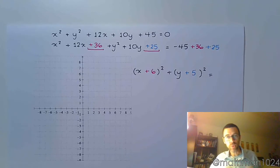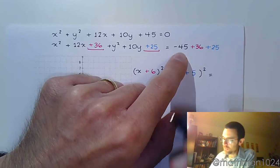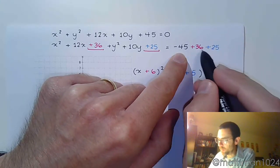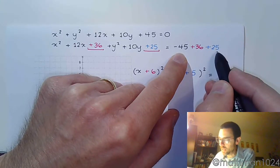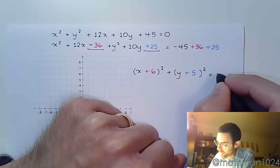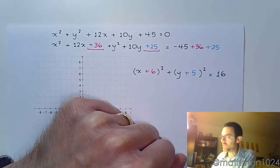So now we just need to combine everything. So we have negative 45, and these guys right here give me 61. So negative 45 and 61 will give me 16.